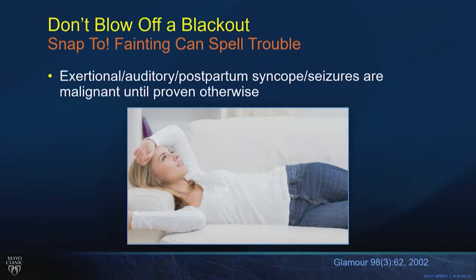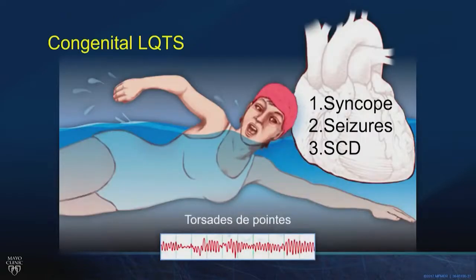The kinds of faints that should bother us: exercise-timed, emotionally triggered, occurring in the postpartum period, auditory activated. These syncopal episodes or seizures are malignant until proven otherwise. It's not really epilepsy, but many long QT and CPVT patients get misdiagnosed as epileptics and treated with anti-epileptic medications. Exercise-triggered seizures: before the neurologist commits to epilepsy, we should think of organs south of the brain — get an ECG, not just an EEG.